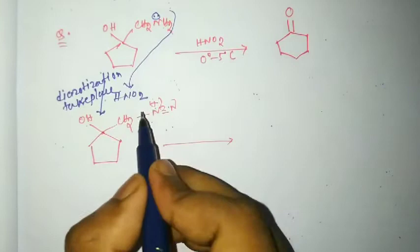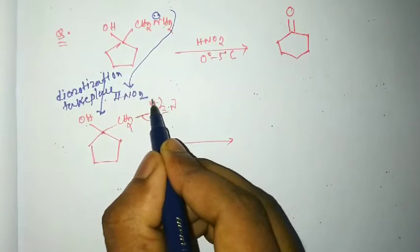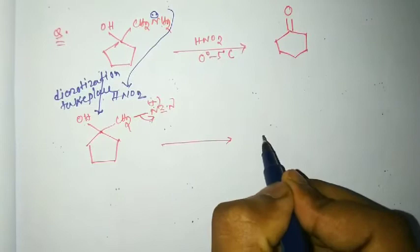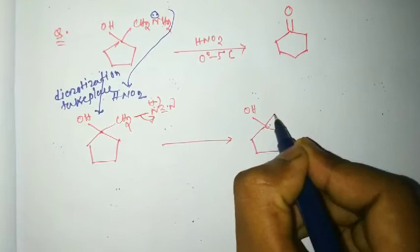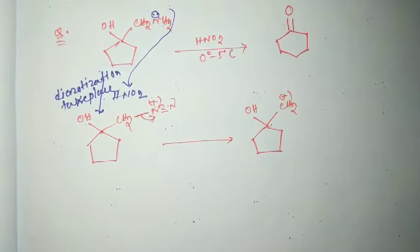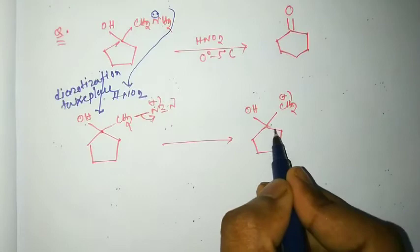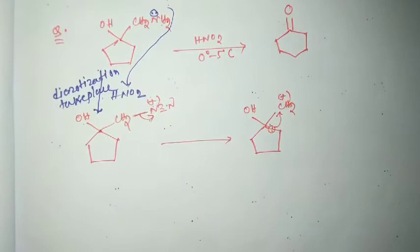In the next step, the sigma bond breaks and nitrogen is liberated as N2 gas. Since it is a good leaving group, a carbocation forms. Then in the next step, this sigma bond migrates.